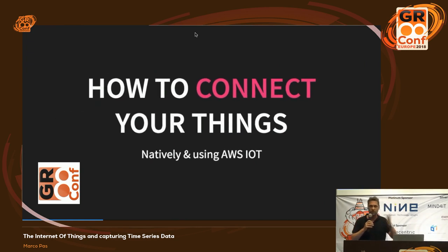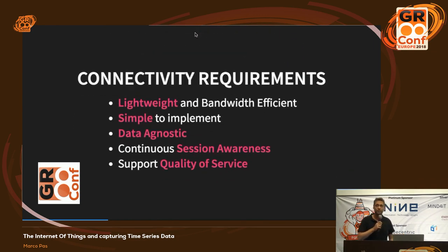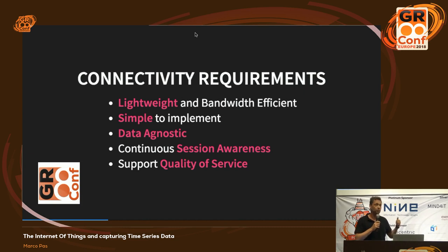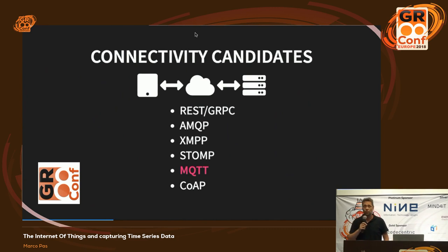So quickly: IoT devices with an operating system - could be small, could be big, a refrigerator, Raspberry Pi, even smaller. At the end, you need to connect that thing. For connections, you need some kind of connectivity with requirements: it should be simple, low bandwidth, data agnostic - able to send any kind of data. Continuous session awareness would be nice, so you know if your device is on or off. Candidates include REST - which is fire and forget with no session awareness - and AMQP, mostly used in big enterprises.